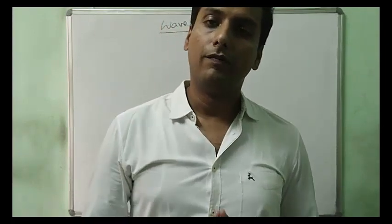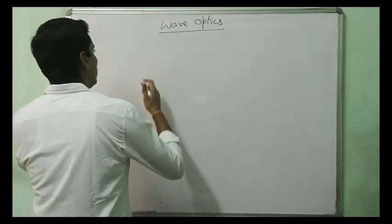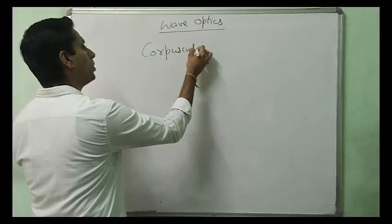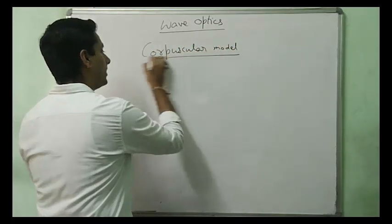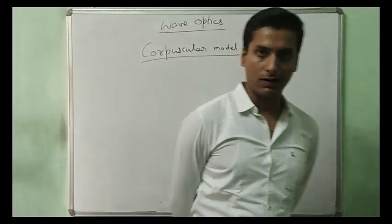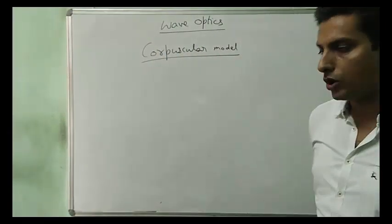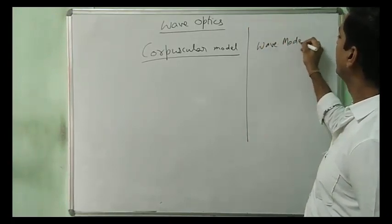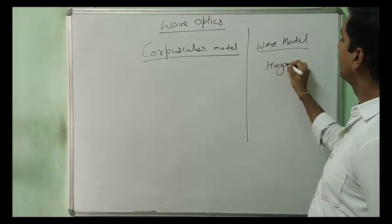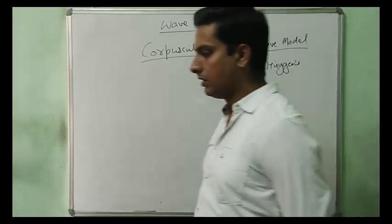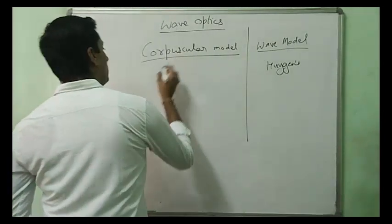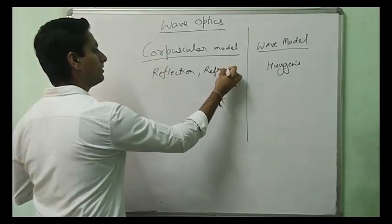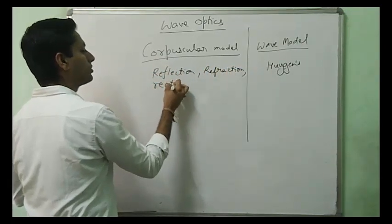There were two models proposed. The first was the corpuscular model, which was generally predicted by Newton's theory and explained by Newton. The other one was the wave model, which was predicted by the Dutch scientist Huygens. The corpuscular model explained reflection, refraction, and rectilinear propagation of light.